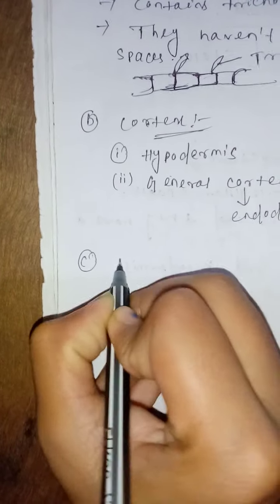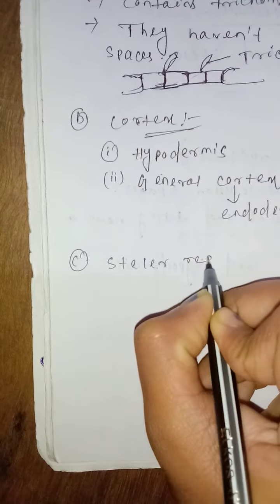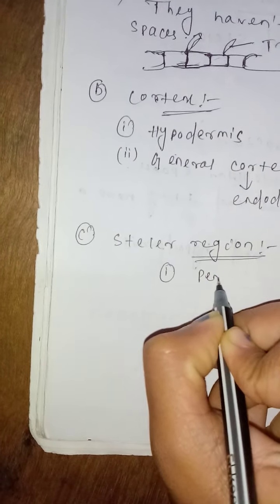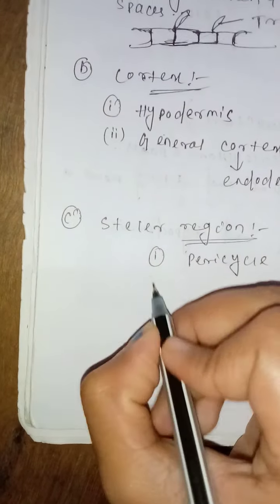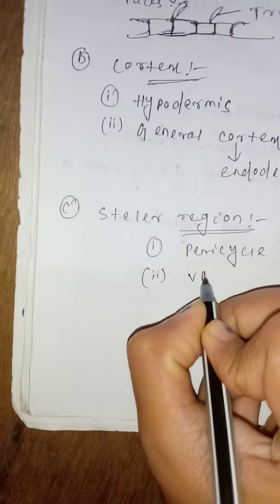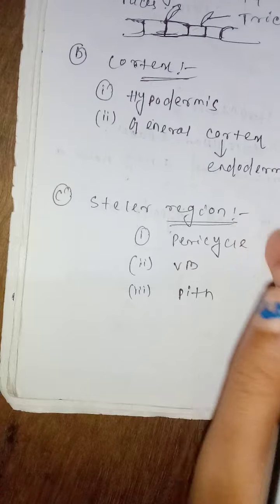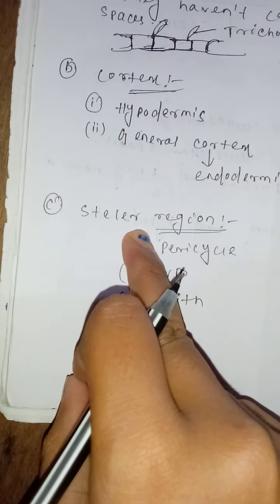Endodermis is barrel-shaped. The third zone is the stellar region. Stellar region is also divided into three types: first is pericycle, second is vascular bundle, and third is pith. Pericycle is the outermost layer of the stellar region.